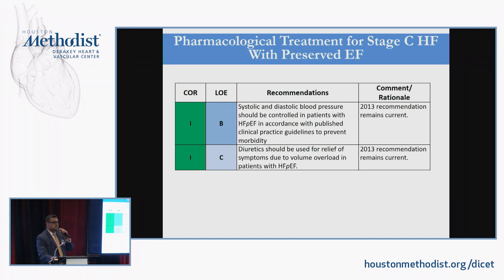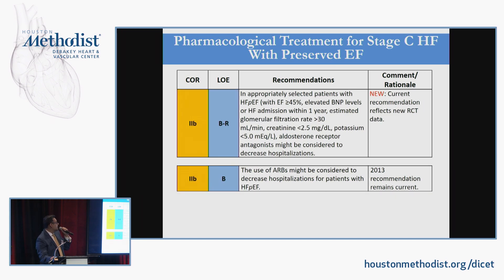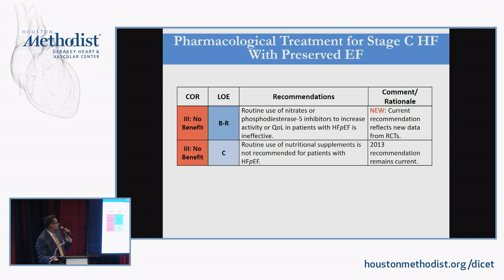The only Class 1 recommendations for HFpEF are blood pressure control and diuretics if there is evidence of fluid retention. Class 2A recommendations include revascularization if coronary artery disease is present, and rate or rhythm control if they have AFib. Class 2B: spironolactone, because the TOPCAT trial showed a tendency toward reduced heart failure hospitalizations. Based on the RELAX trial and the NEAT HFpEF trial, nitrates and PDE5 inhibitors are now considered Class 3 recommendations — meaning harm or no benefit.